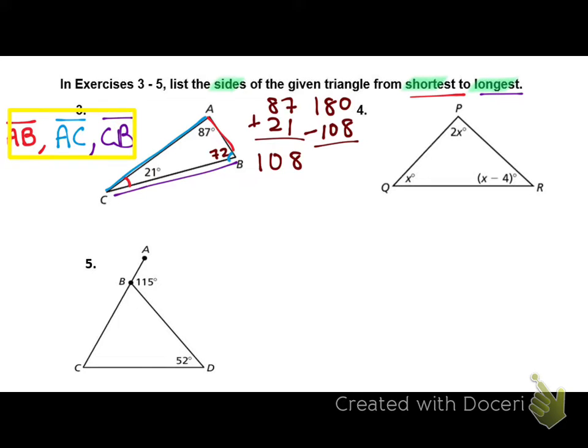Number 4 is a little harder. Which of these is the smallest angle? R. It is R. It's going to be X minus 4. Whatever X is, minus 4. So what is the side across from angle R? QP, PQ, both are correct. And then the medium side length, or sorry, the medium angle is X, across from that is PR. Which means the biggest angle is 2X, which is across from QR.